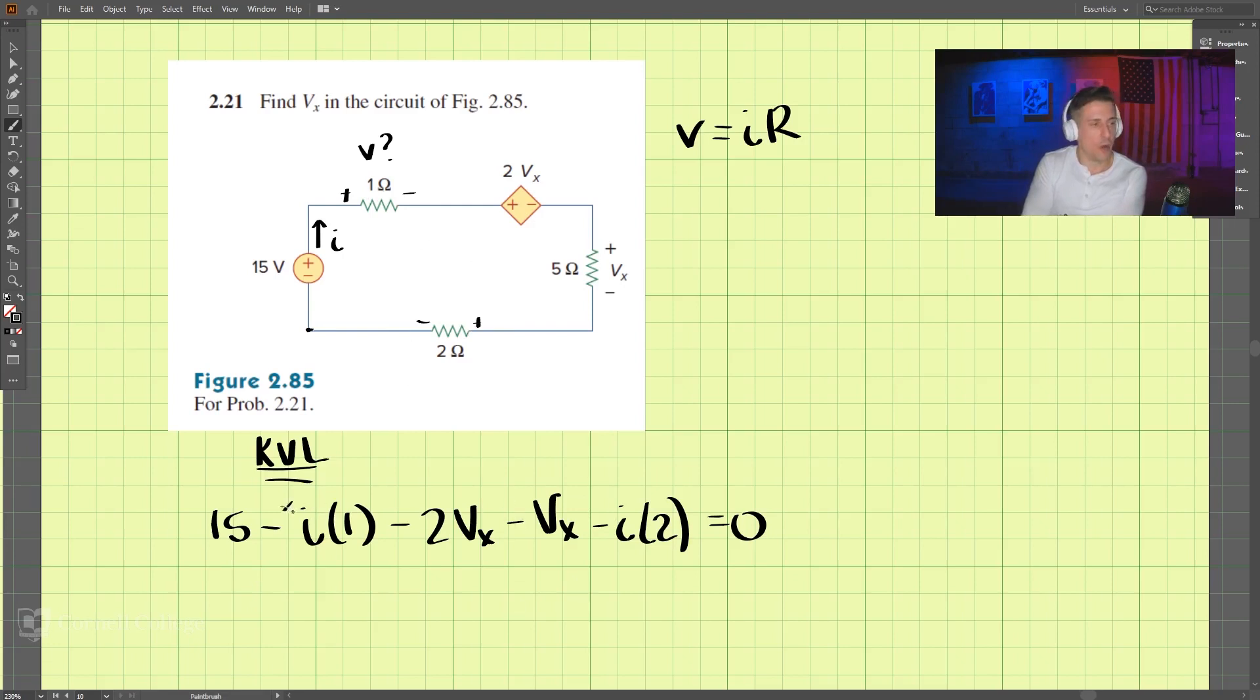So we have two unknowns. We do not know I, we don't know Vx.